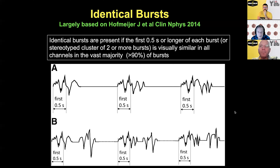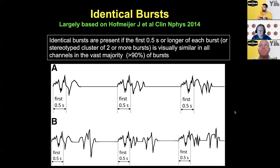If the first half-second of every burst looks similar across all channels in 90% of bursts, that's considered identical bursts. You can see here the first half-second is identical for all three bursts — it doesn't matter what happens after that, just the first half-second. Sometimes it's a couplet of bursts, and as long as the first half-second of the first one always looks the same, that's still identical bursts. Importantly, they don't have to be highly epileptiform — identical and highly epileptiform are two different things.